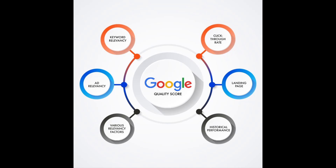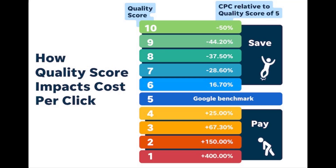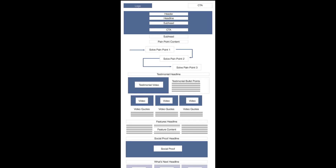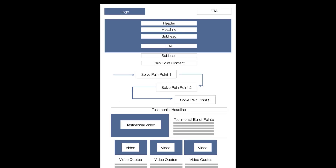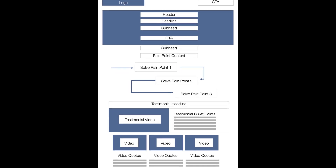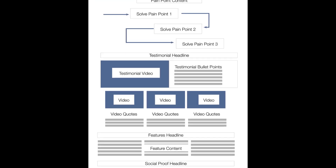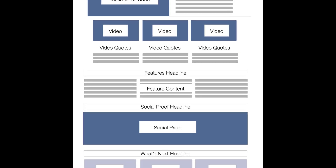Advertising platforms use a similar SEO algorithm to determine your quality score — an arbitrary score given to each page on how it relates to the keyword. This helps advertising platforms keep irrelevant information off of certain searches, but it also allows them to artificially inflate the price of a click. The code structure for this type of page is similar to the SEO structure, with a few major differences.